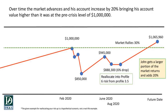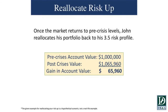The market makes a recovery, rallying back 30 percent — getting the market back to even. But what happens to John's account? John's account gets 20 percent back. Bringing the account back 20 percent after a 6 percent drop actually nets John an increase of over $65,000 in this strategy.